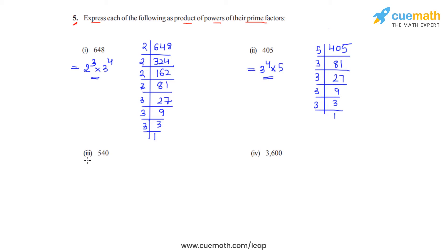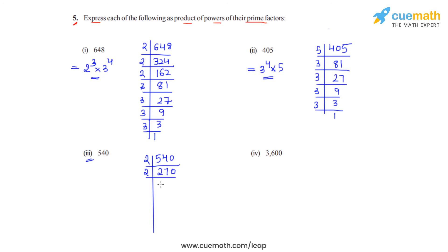We will now be solving the third part which is 540 and we will have to prime factorize 540. So we will be dividing it first by 2. If we divide 540 by 2 that gives us the answer as 270. Now 270 can again be divided by 2, that gives us the answer as 135.